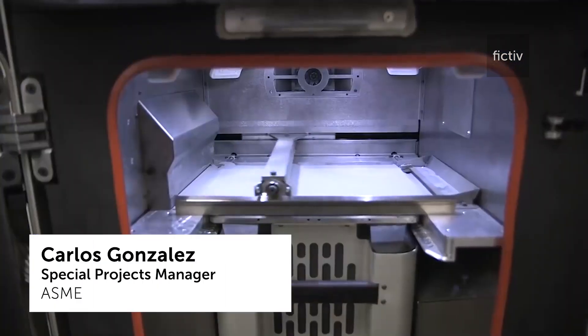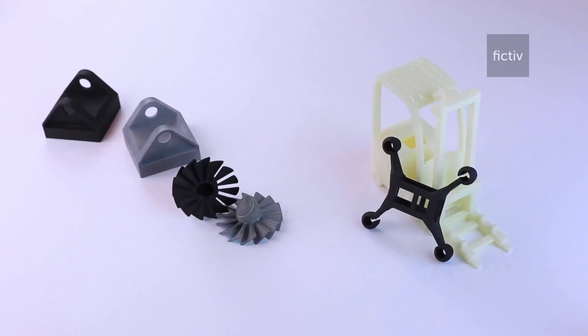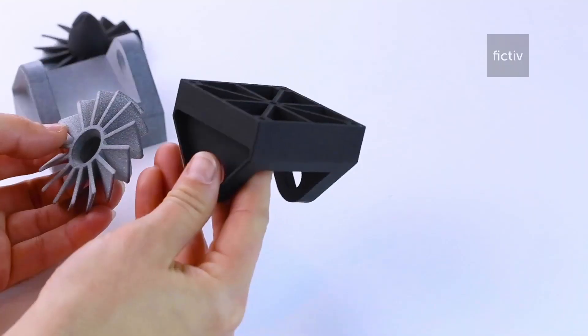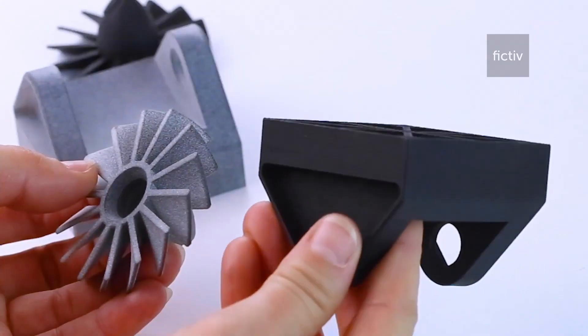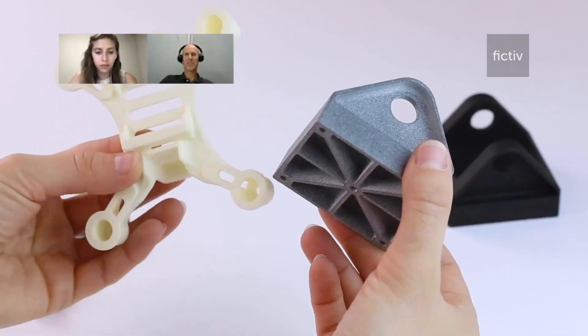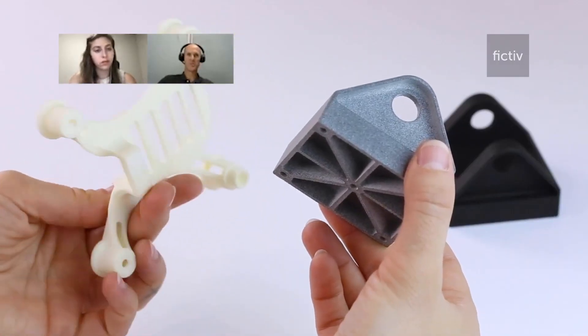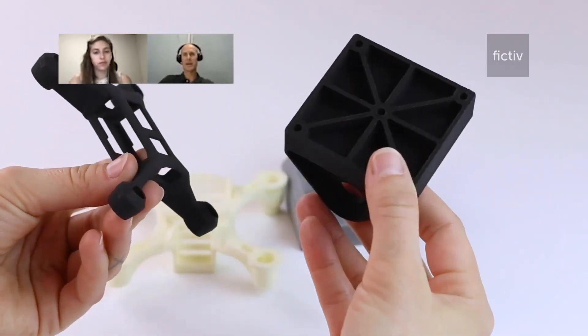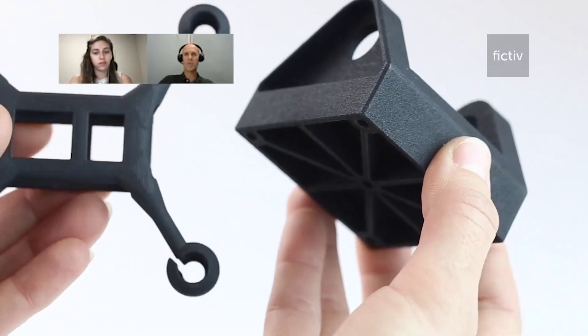If you need to produce less than a thousand parts, what would you recommend between injection molding, urethane, or 3D printing? The rule of thumb—it's a hard question to answer because the part geometry has a lot to do with it. If you're needing maybe 10 to 25 parts, 3D printing has always been a great way of doing that.